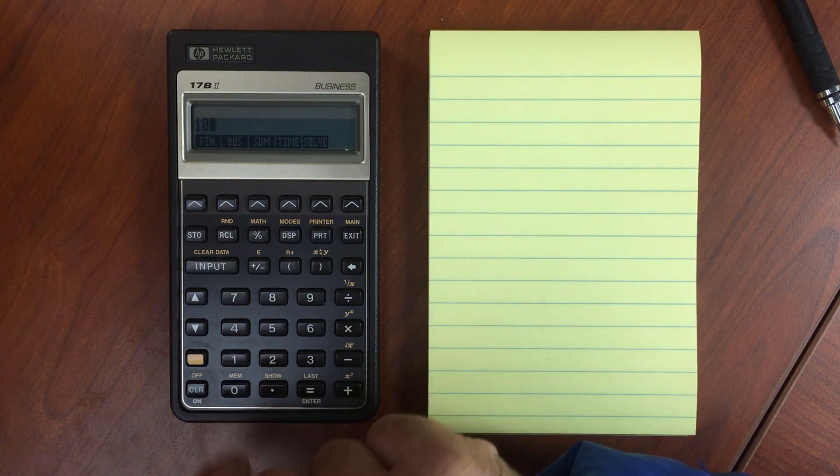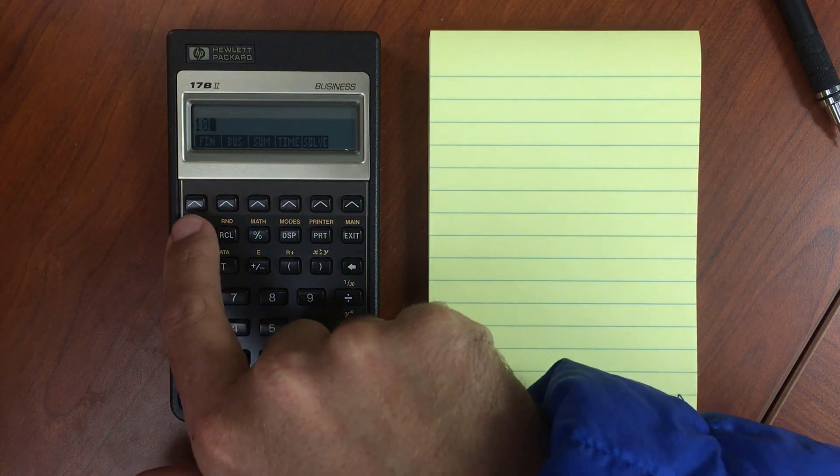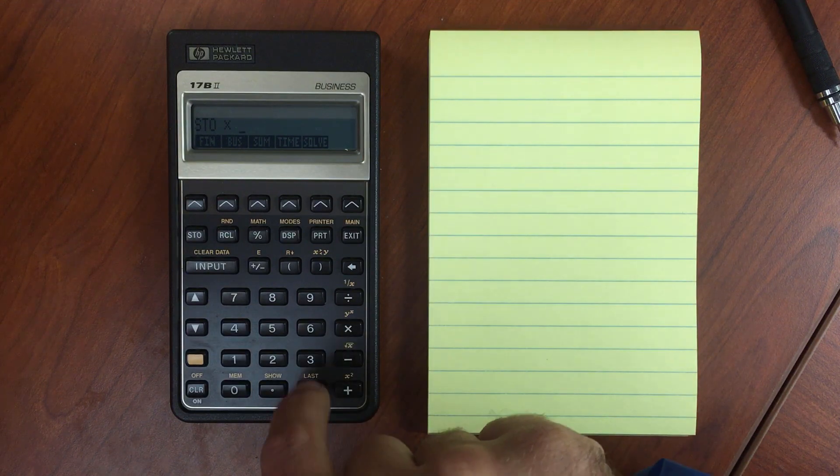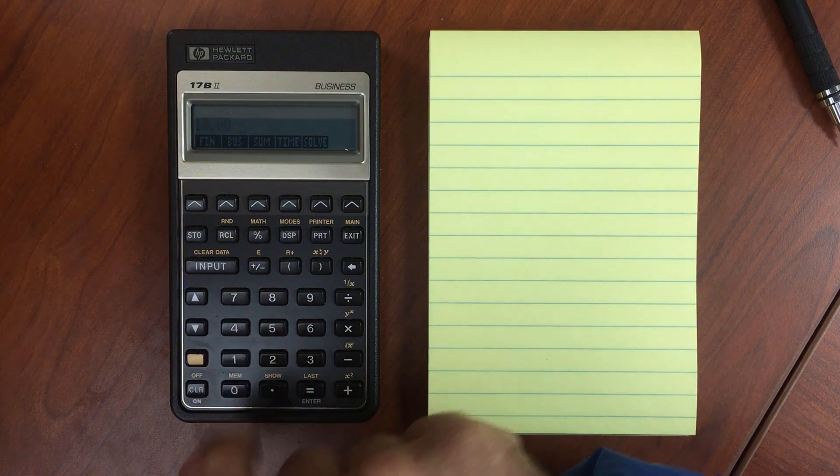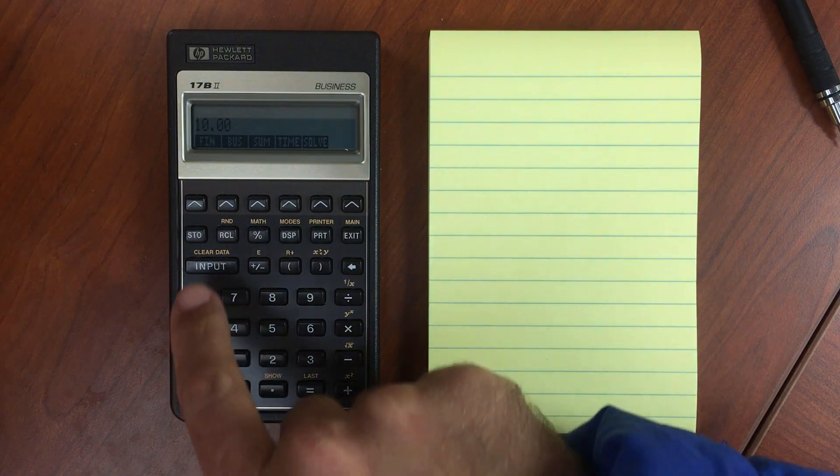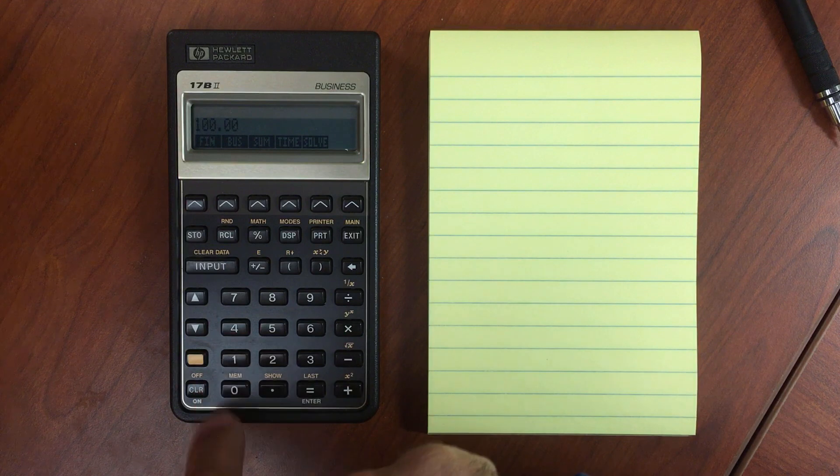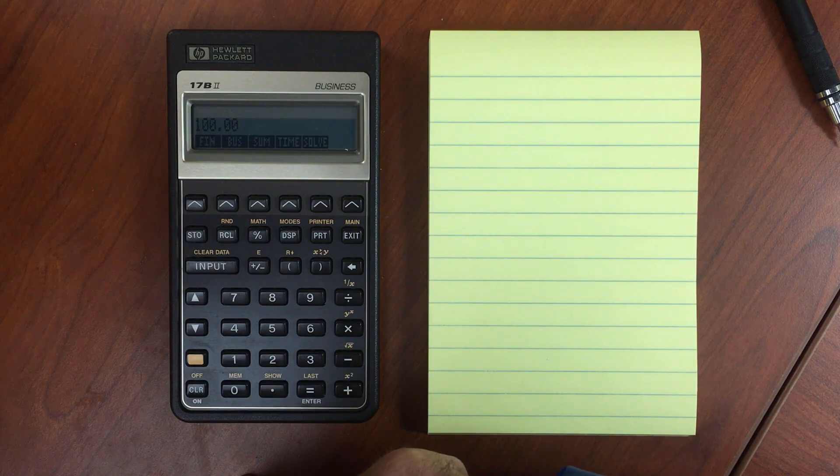So I would store, and let's multiply what's in register 1 by that number that we just entered, which was 10. So now if I recall register 1, I have 100, which is 10 times 10.